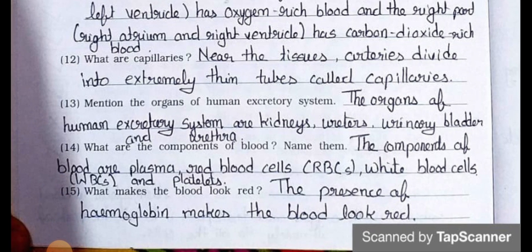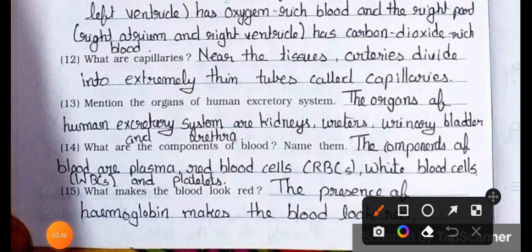Question number 13: Mention the organs of the human excretory system. Answer: The organs of the human excretory system are kidneys, ureters, urinary bladder, and urethra.